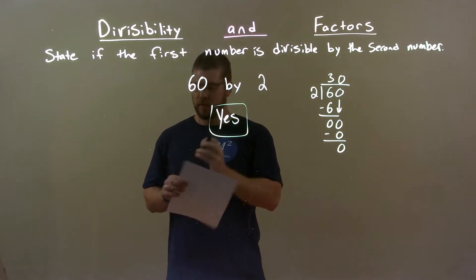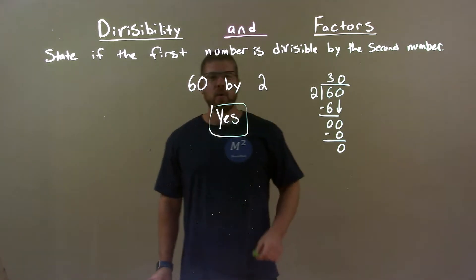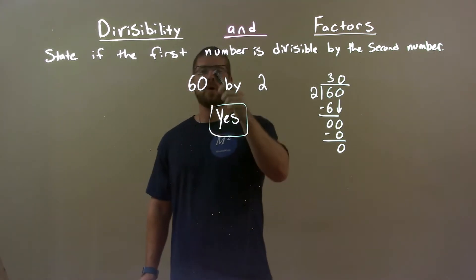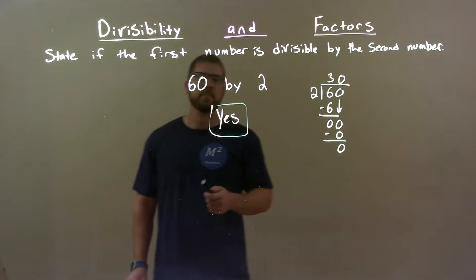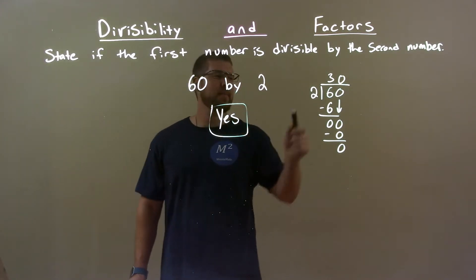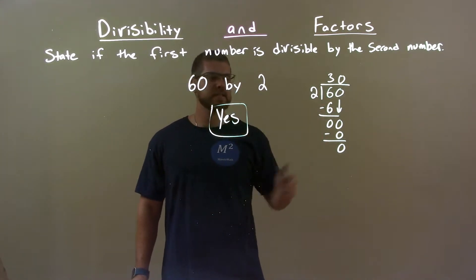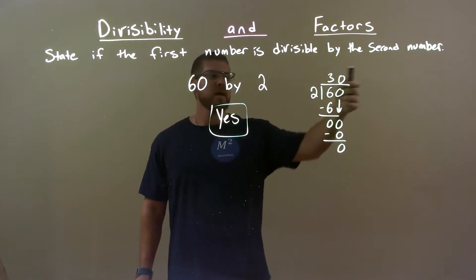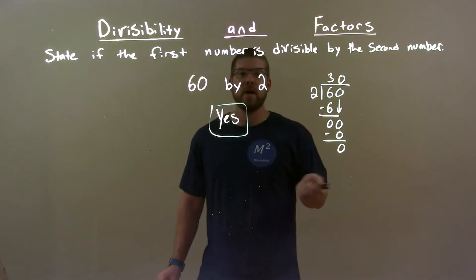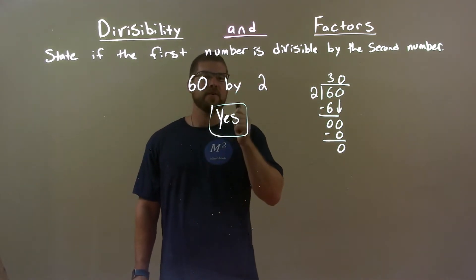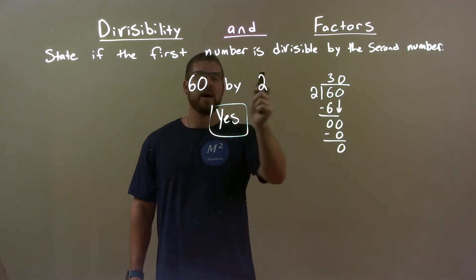So, quick recap. We were checking 60 by 2. Well, 60 is even, so 2 will always go into an even number. We double-checked that by doing long division. 2 into 60 went in evenly — no remainders. So that means yes. Our final answer here is yes: 60 is divisible by 2.